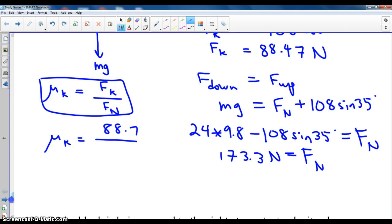So mu is equal to the ratio F_k, 88.47, right, that's what I found, right, over F_N, which what I got was 173.3. 88.47 over, I'm just going to do a second answer, and I got 0.51. That's what mu get.